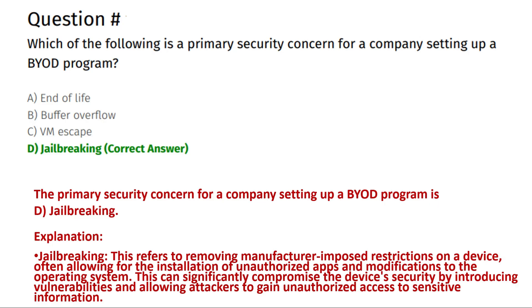The correct answer is Option D: jailbreaking. Jailbreaking refers to removing manufacturer-imposed restrictions on a device, often allowing the installation of unauthorized apps and modifications to the operating system. This can significantly compromise the device's security by introducing vulnerabilities and allowing attackers to gain unauthorized access to sensitive information.